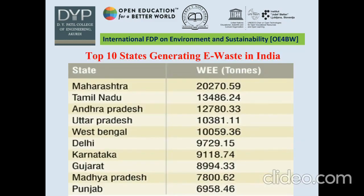Top 10 states generating e-waste in India: While 10 states generate 70% of total e-waste generated in the nation, 65 cities in India generate more than 60% of total e-waste. Among the 10 largest e-waste generating states, Maharashtra ranks first, followed by Tamil Nadu, AP, UP, Bengal, Delhi, Karnataka, Gujarat, MP, and Punjab.